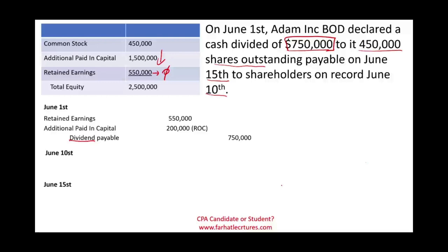This is an important concept in taxation called return of capital, or ROC — we are giving the shareholders their money back. From a tax perspective, this is not taxable because it's considered return of capital; we are giving them back their money, which is not a profit and should not be taxed. So on June 1st, we debit retained earnings, debit additional paid-in capital for the difference, and credit dividend payable.